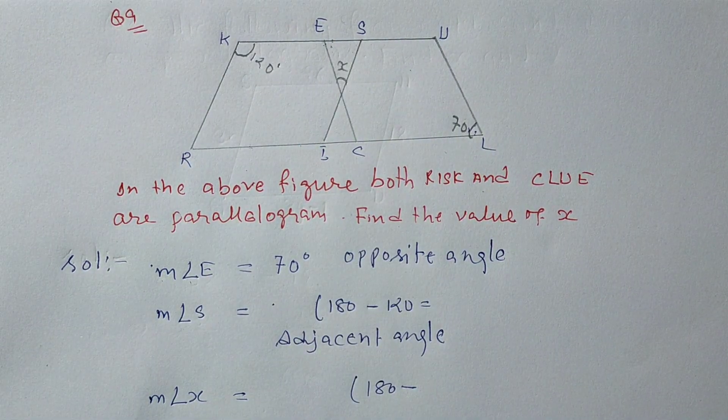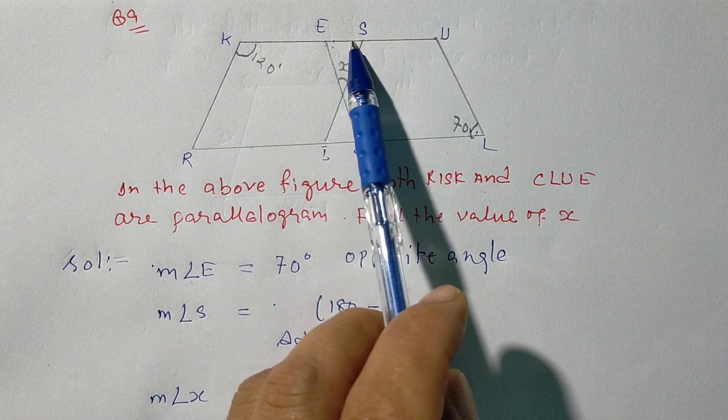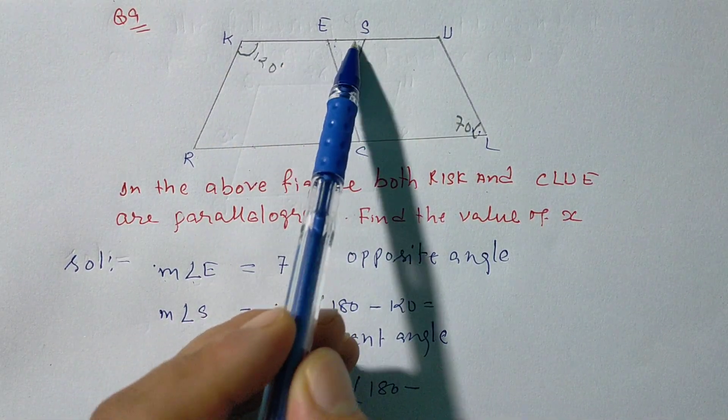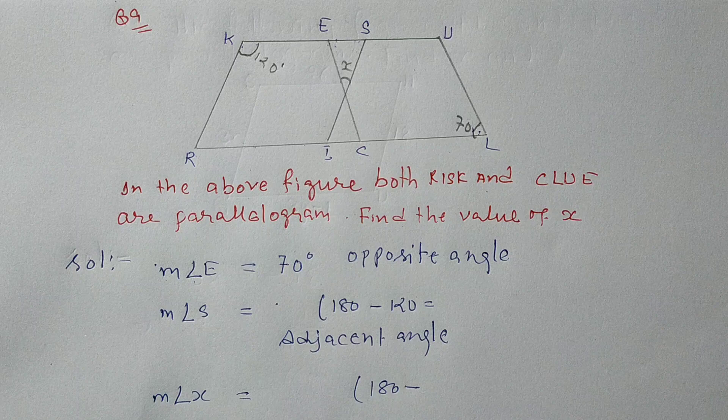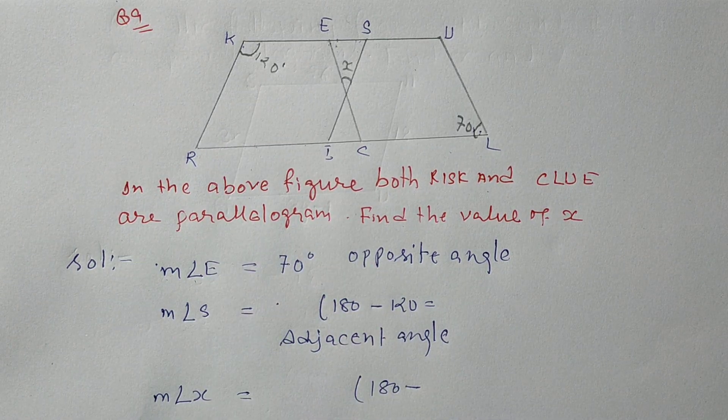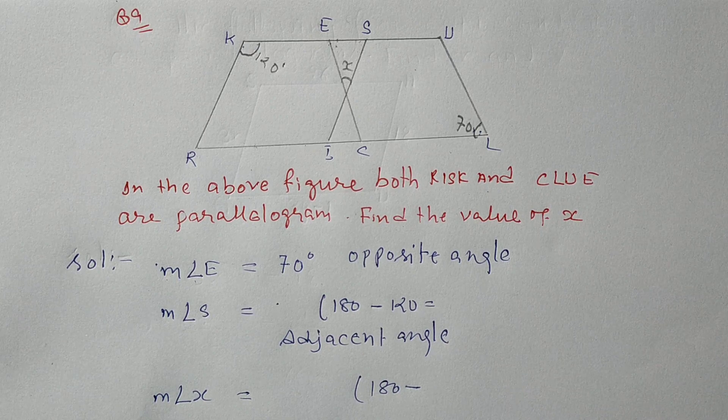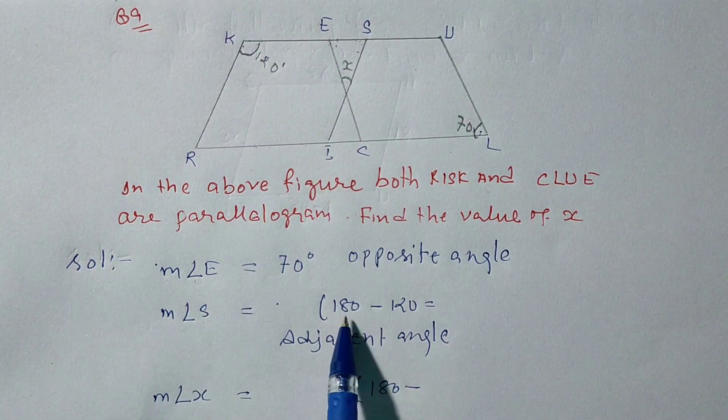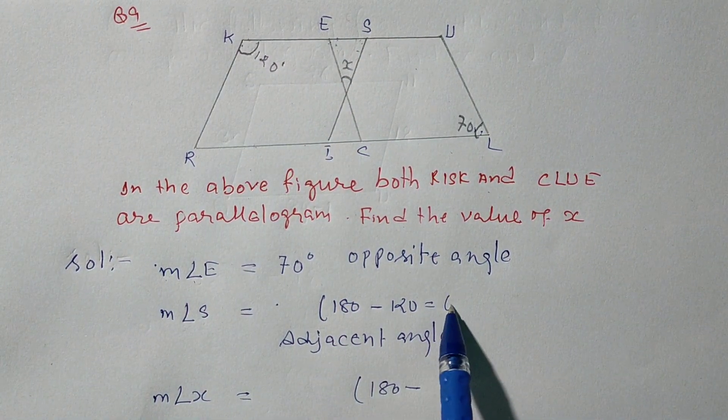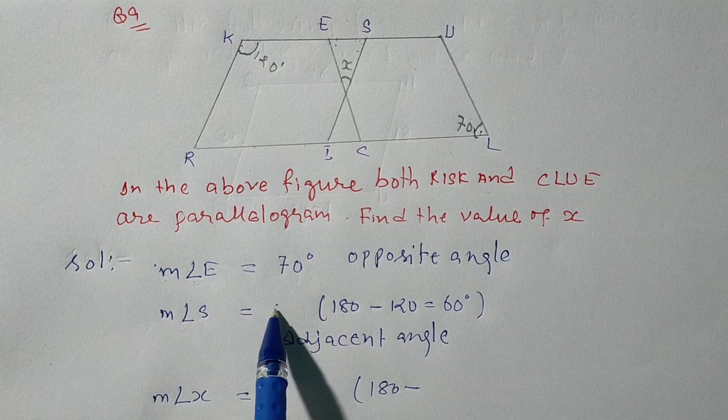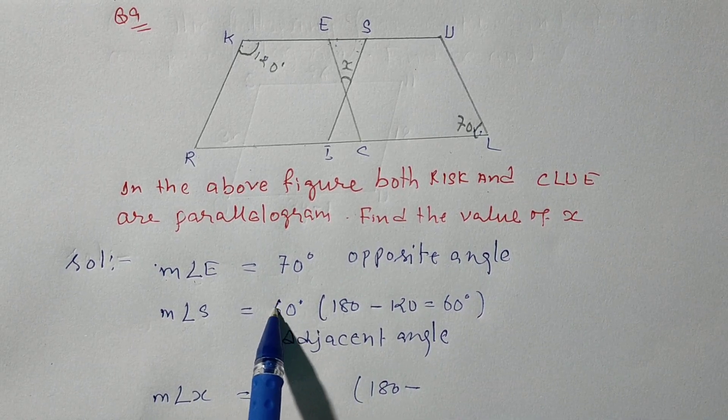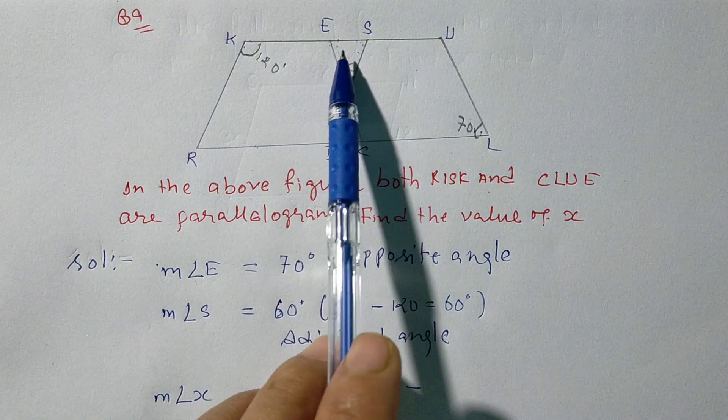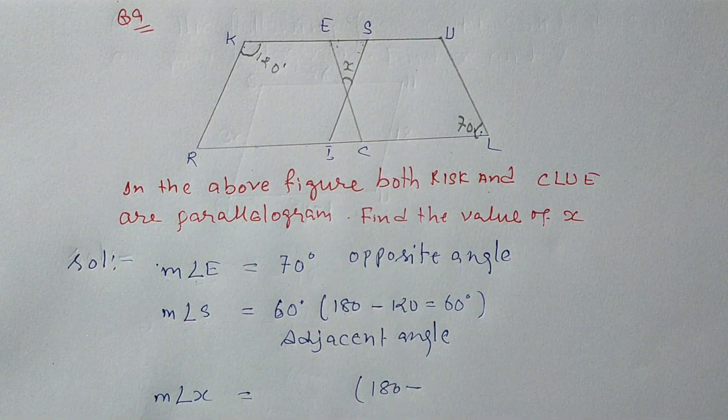Now, what is angle S? Adjacent angle. In parallelograms, adjacent angles are always supplementary. Supplementary is 180 degrees. So angle S is 180 minus angle E. Angle S is 60 degrees, angle E is 70.